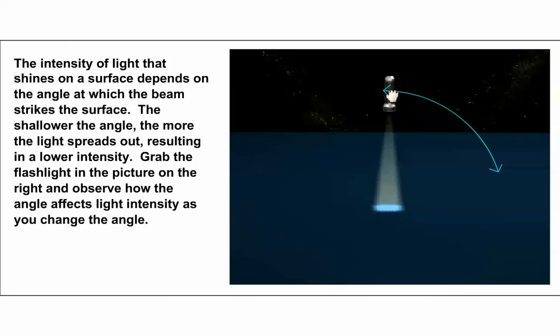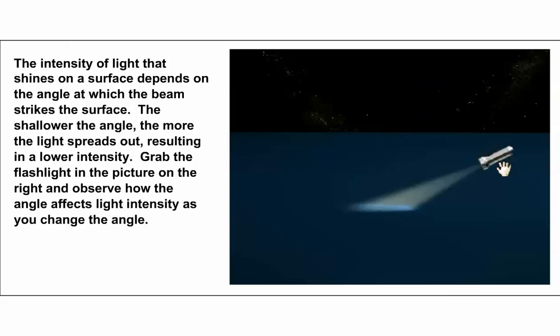But if we change the angle of our flashlight and make the light come in at a lower angle and strike the surface, the light now gets spread out over a larger area, so the amount of light per unit area is reduced.